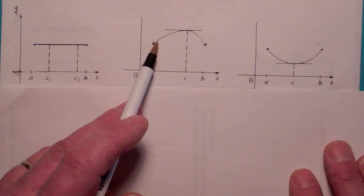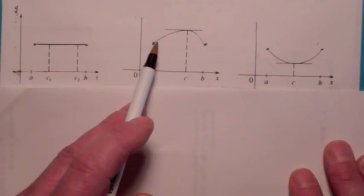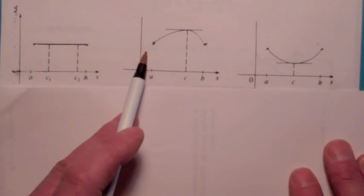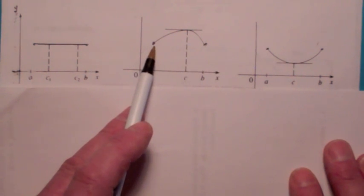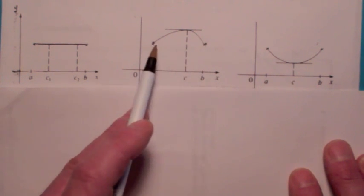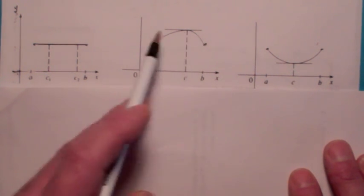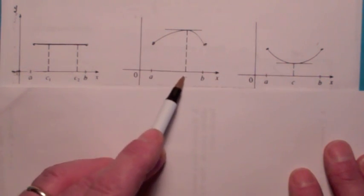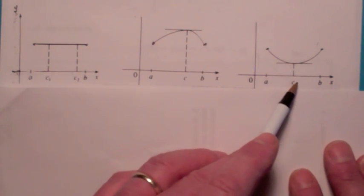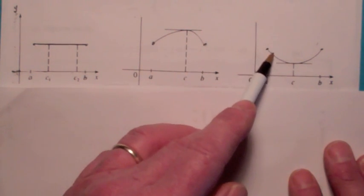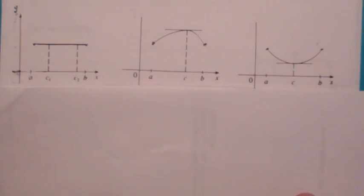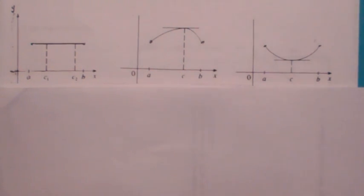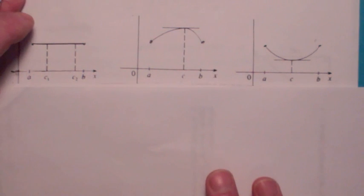Now suppose we have a continuous and differentiable function that isn't constant — say it goes up at some point. By the Extreme Value Theorem from section 4.1, this function obtains an absolute max on a to b. Since it goes up, it doesn't obtain it at the endpoints; it has to obtain it somewhere in the middle, therefore at a local max. By Fermat's Theorem, the derivative has to be zero there. Using the exact same reasoning, we can show the derivative has to be zero if the function goes down at all. So we just proved Rolle's Theorem — these are the three cases the book discusses.